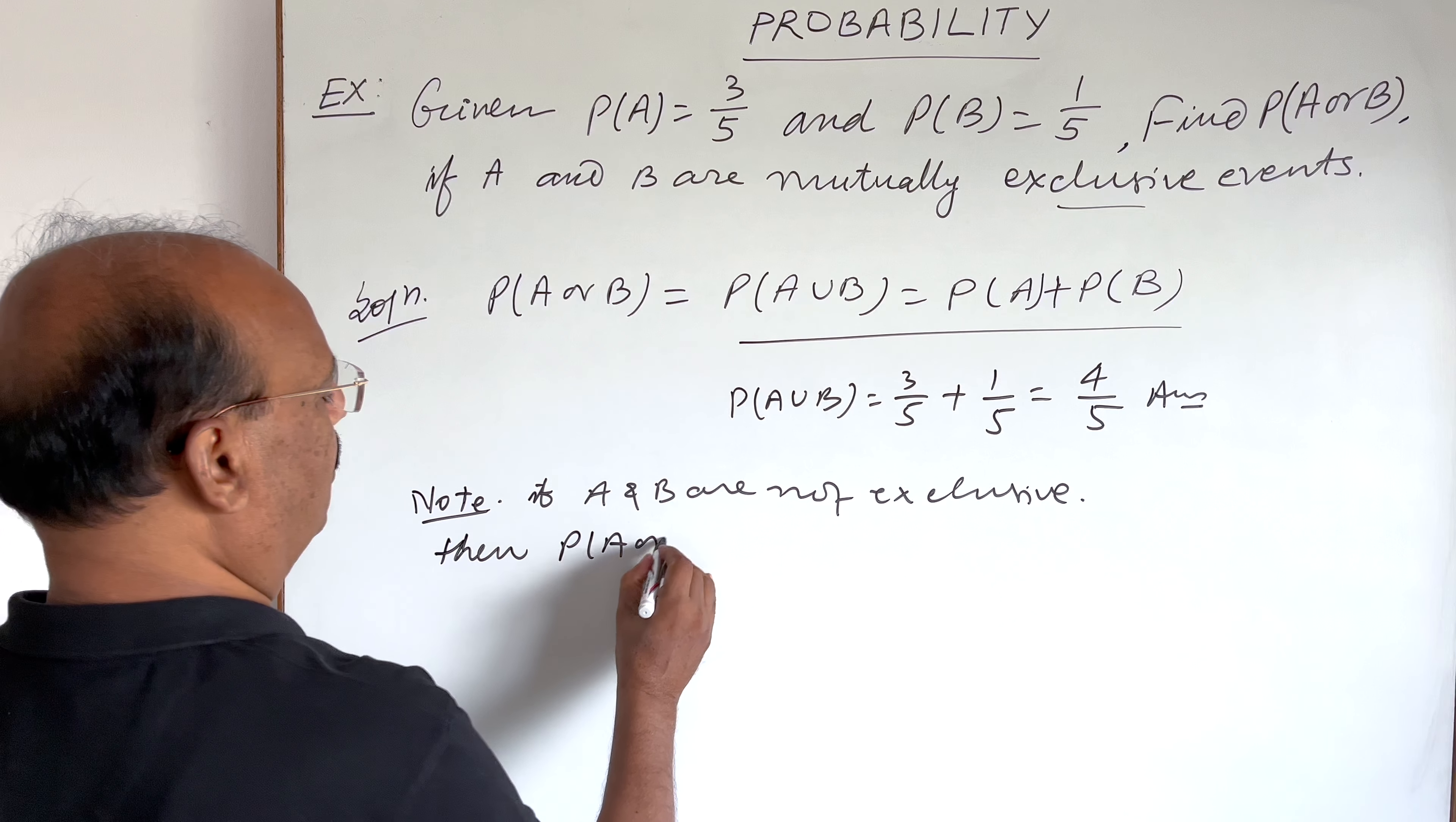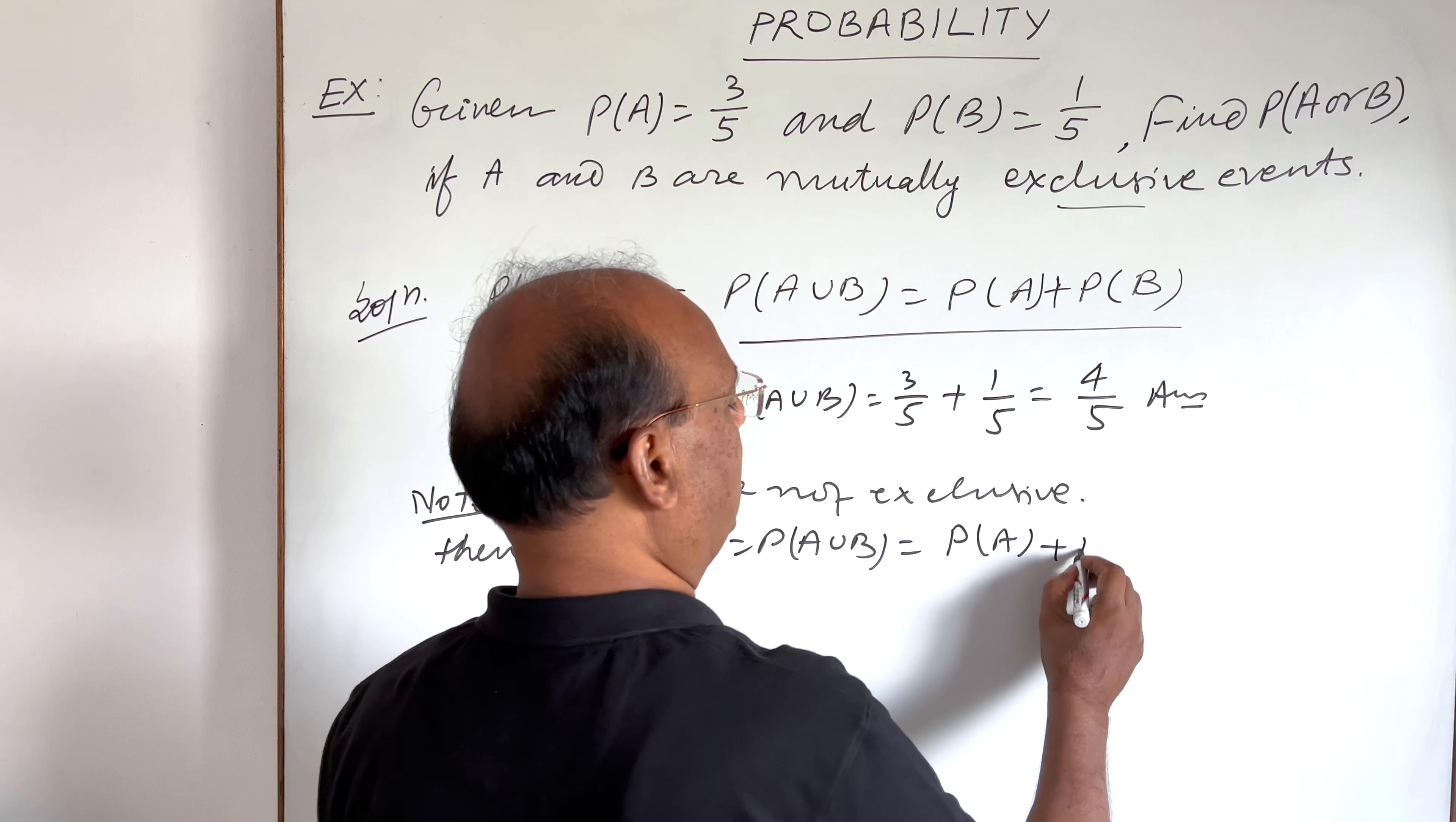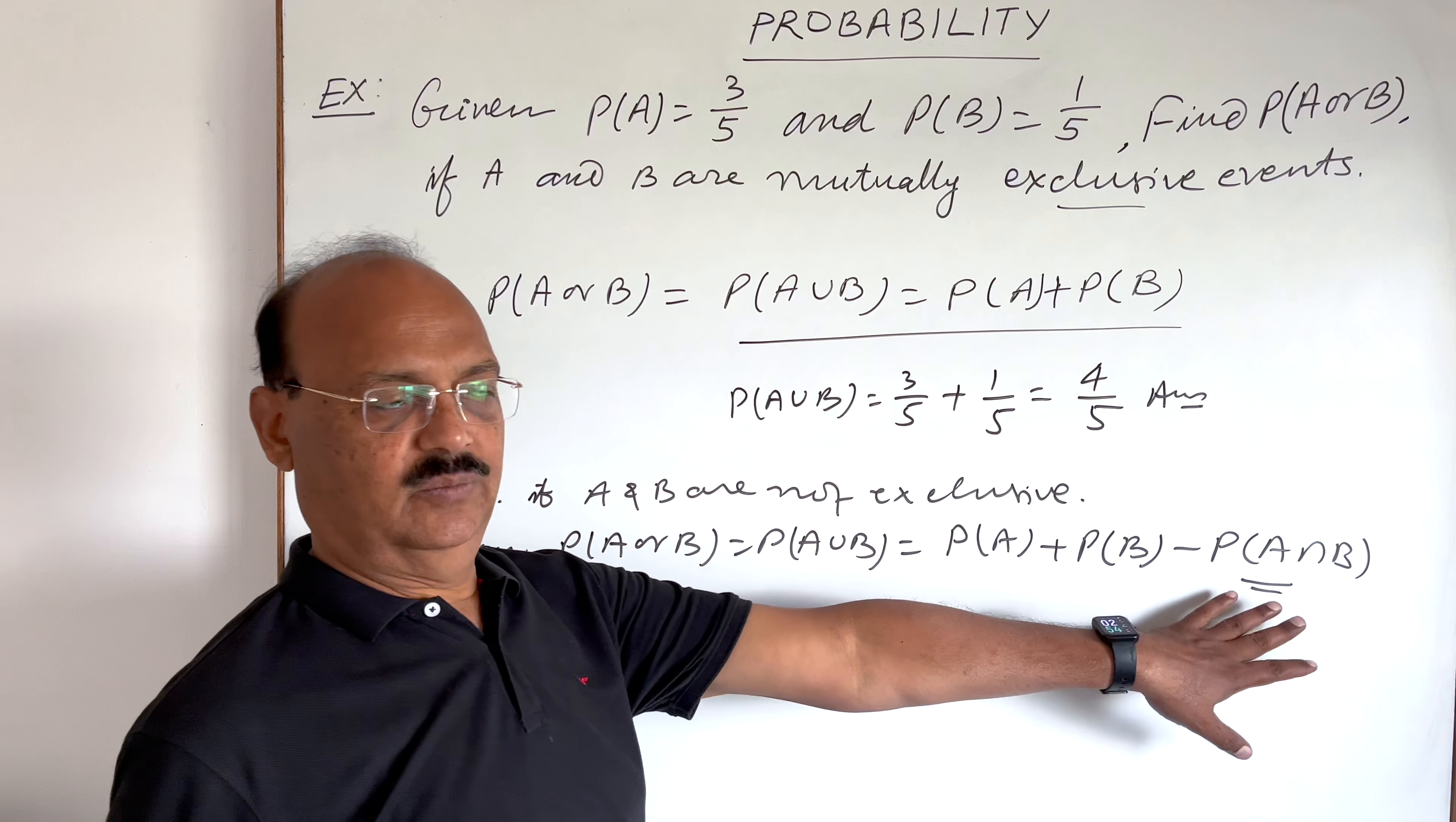Probability of A or B, means probability of A union B, will be equal to probability of A plus probability of B minus probability of A intersection B. This part has been added, minus A intersection B is included.